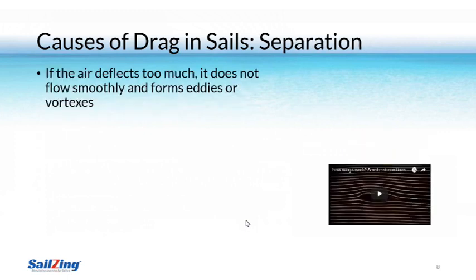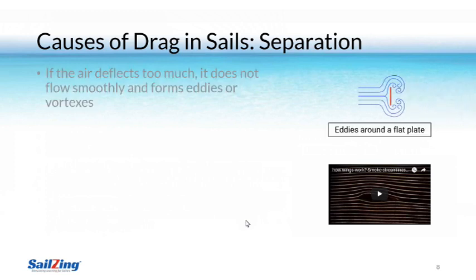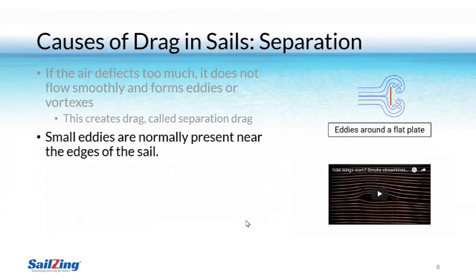The other major cause of drag is due to the separation of airflow as it passes over the sails. If air bends too much around the shape, it separates and stops flowing smoothly, forming what we call eddies or vortexes. You can see the eddies around the flat plate in this diagram. This creates drag since the swirling air pushes in all directions against the object, slowing it down — it is sometimes called separation drag. The edges of the sail, including the mast, boom, and leech, all have these abrupt effects on the air and generate small eddies. There's nothing much we can do about these.